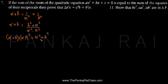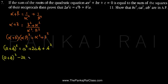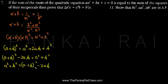Remember that whenever you have the term α² + β² in a quadratic equation, you use the identity: (a+b)² = a² + 2ab + b². Rearranging, a² + b² = (a+b)² − 2ab. So alpha squared plus beta squared can be written as (α+β)² − 2αβ.